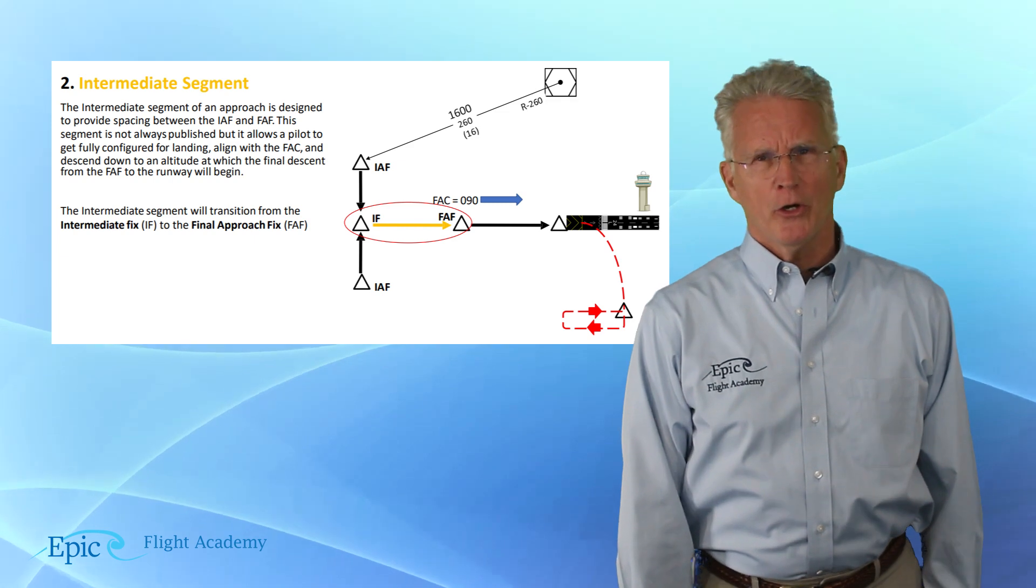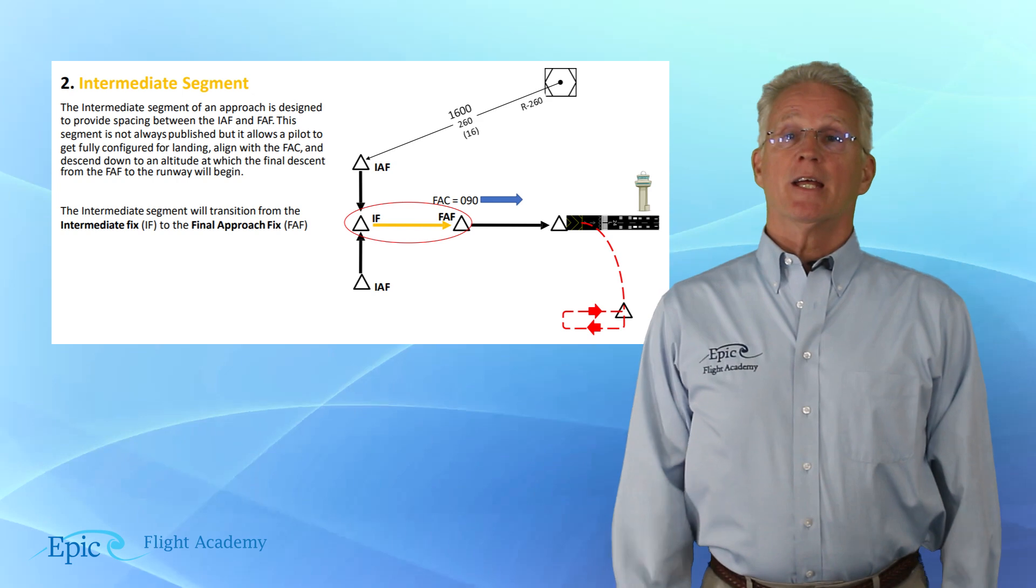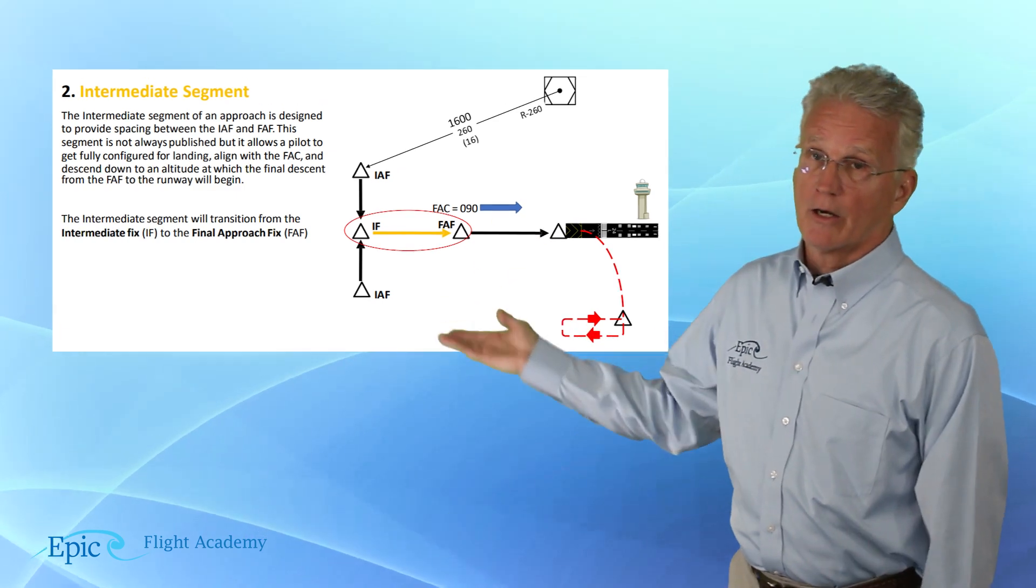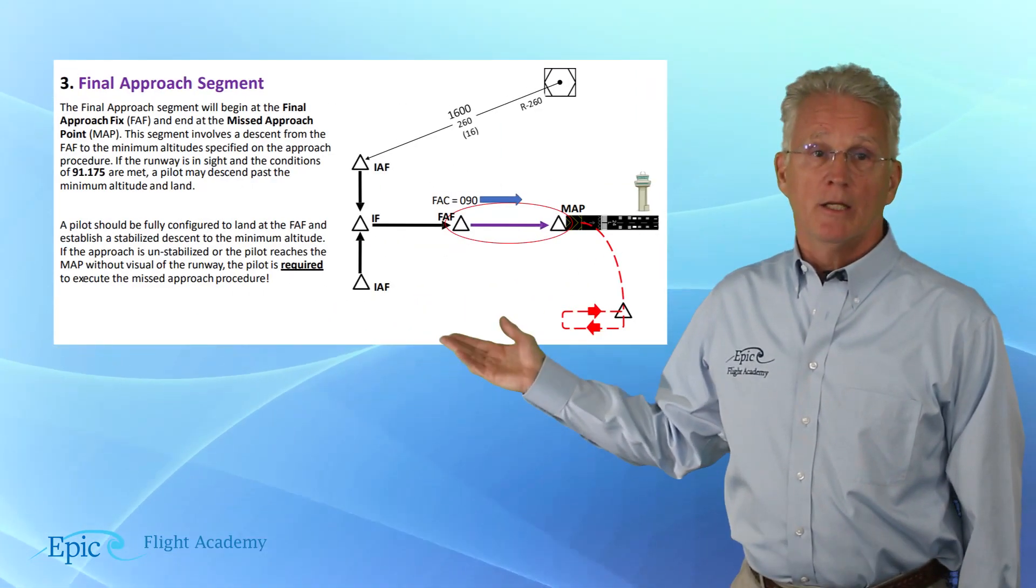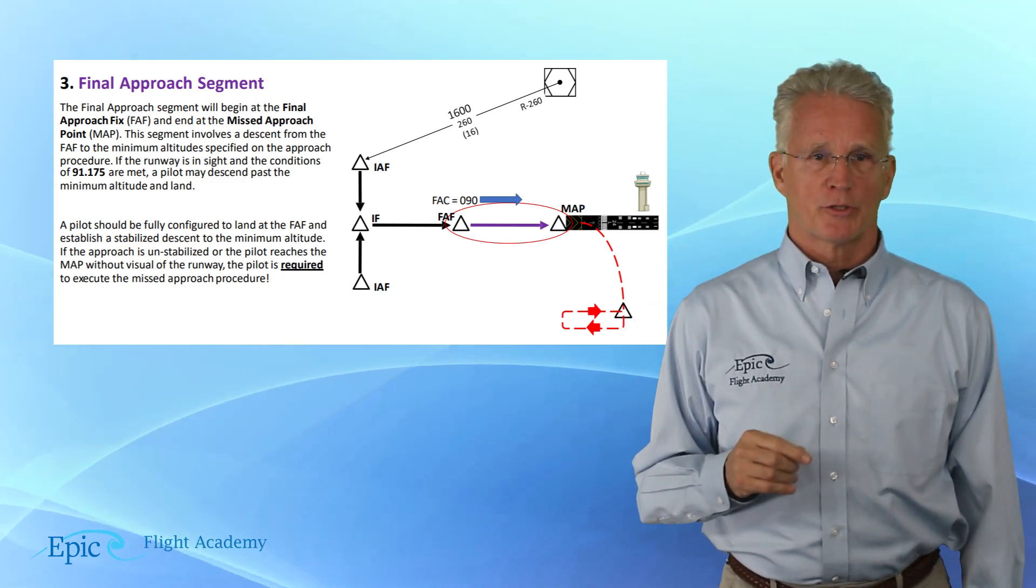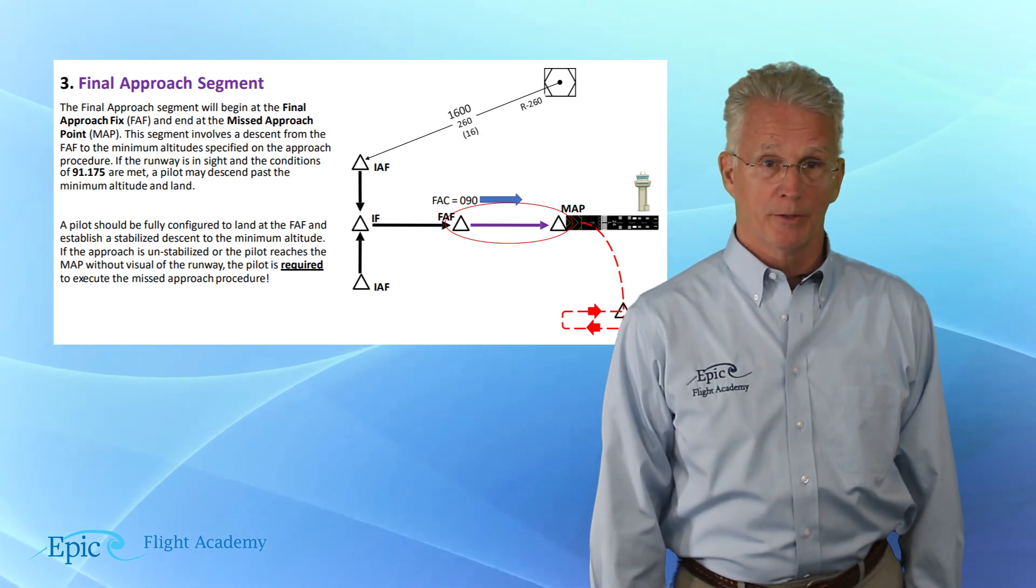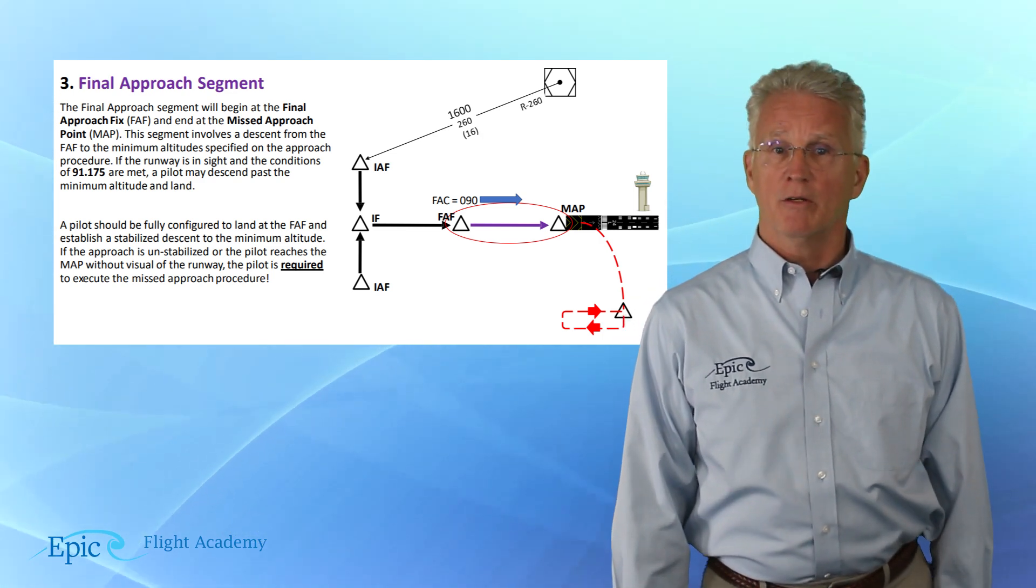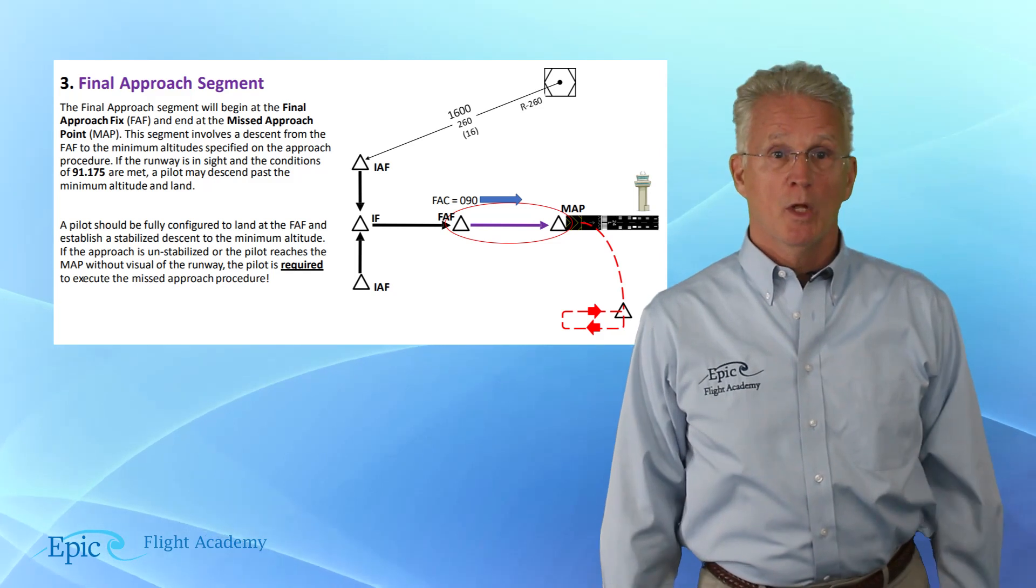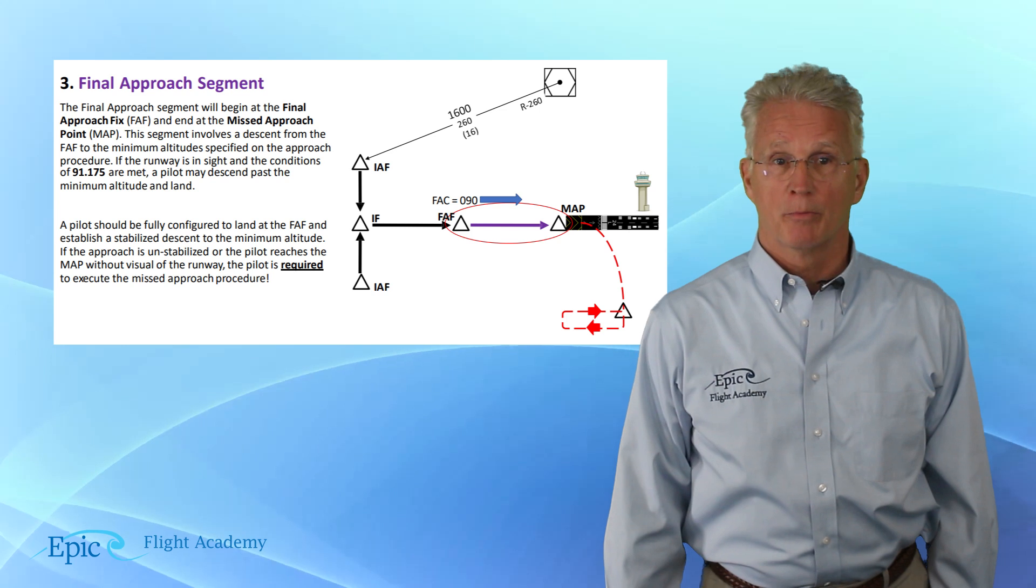The third segment of the approach is that descent to the runway. We call this the final approach segment, and on our slide you see it here depicted in purple. The final approach segment will begin at the final approach fix and it will end at the missed approach point. This segment involves a descent from the final approach fix to minimum altitudes specified for that approach procedure.